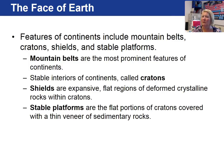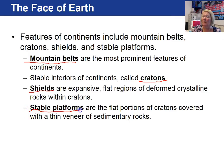Moving on to the continents, the major features include flat areas and elevated areas. Mountain belts are our elevated areas, very prominent on the continents. The stable interiors of continents are called cratons. A craton can be broken down into shields — flat regions of very old crystalline igneous and metamorphic rock — and stable platforms, where the shield has been covered by a thin veneer of sedimentary rocks.